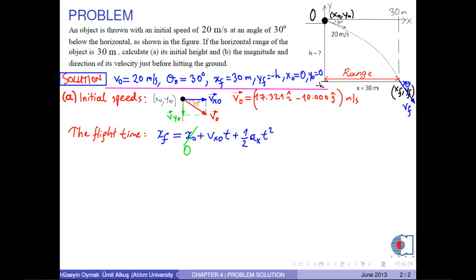And since the speed in the x component is constant, then x component of the acceleration is 0. As a result, we obtain xf equals vx0 times t. From this equation, we obtain an expression for t as xf over vx0. If we insert the corresponding numerical values into this equation, we get the flight time as 1.7320 seconds.